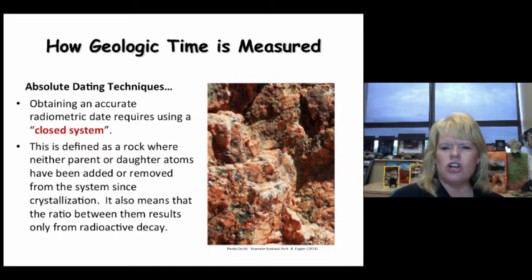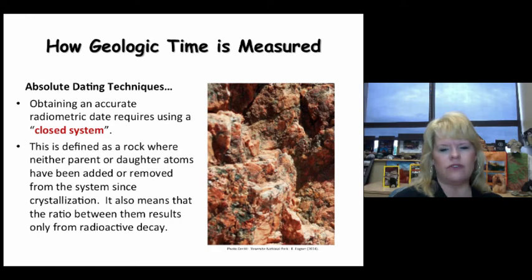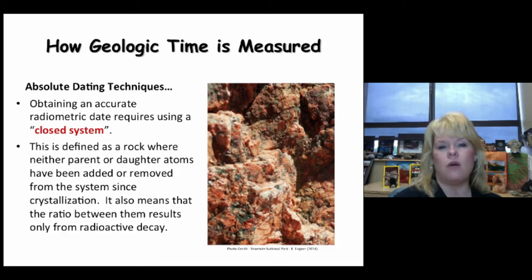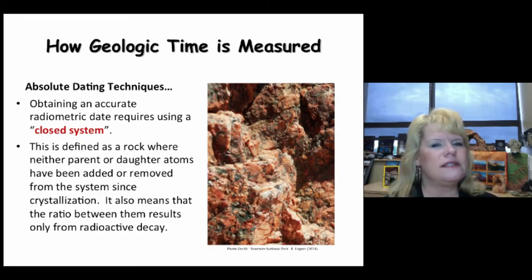Obtaining an accurate closed system is critical to radiometric dating. A closed system is where a rock has had neither parent nor daughter atoms added or removed since it initially crystallized — like this pink granite. This means the ratio between the daughter and parent isotopes will produce a very dependable radioactive decay ratio, helping us narrow the scope of the accurate geologic time for that rock.